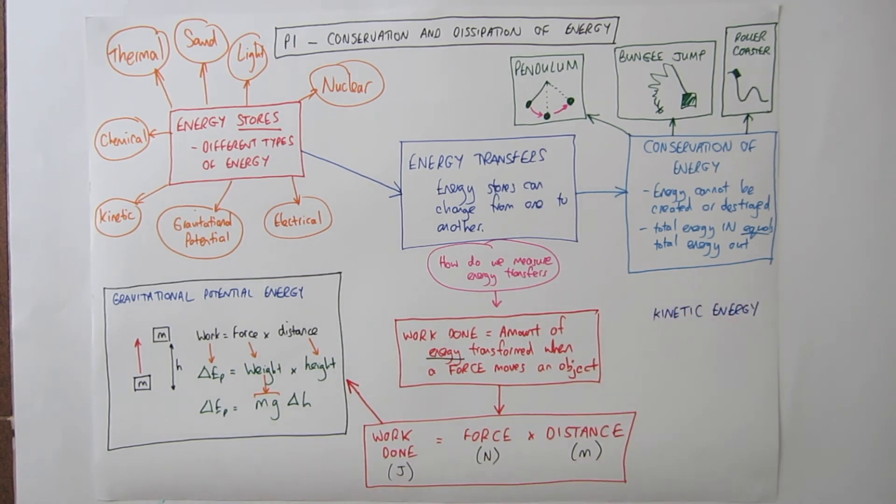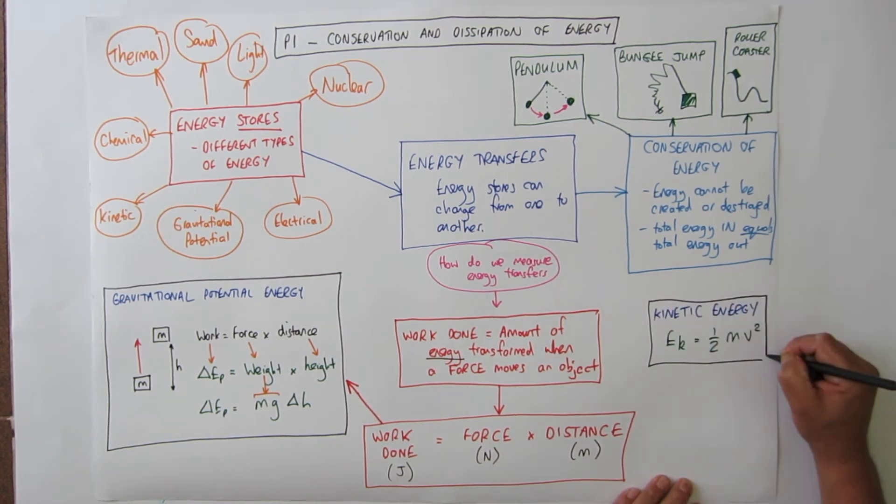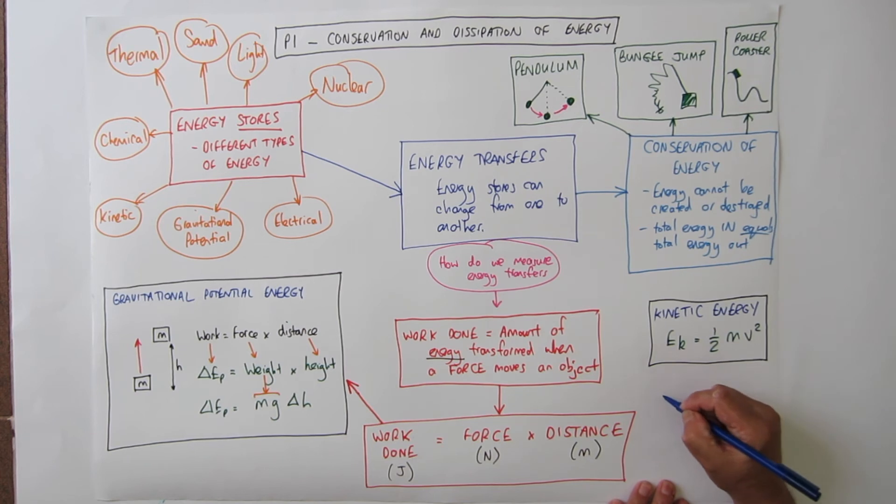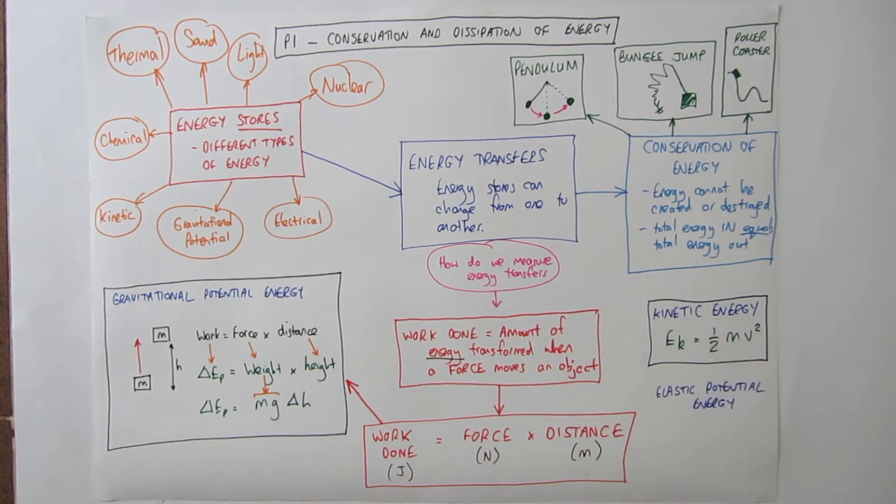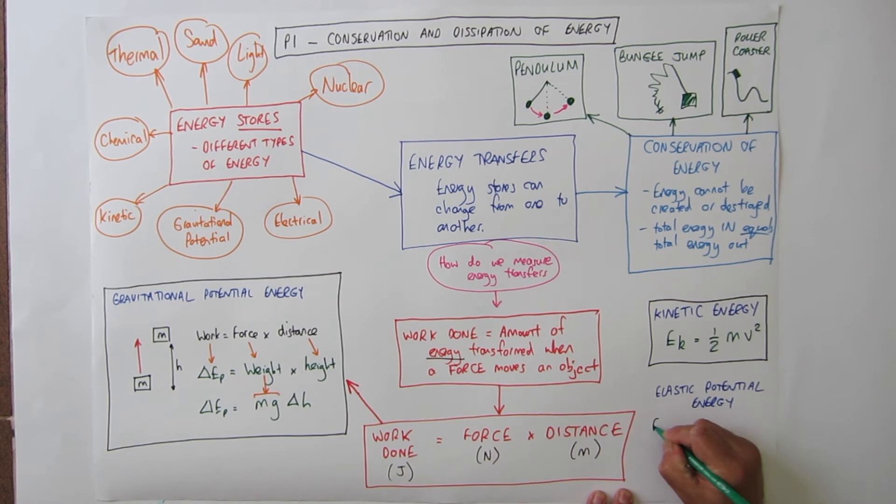The second equation that comes from the work done equation is one for kinetic energy. Where kinetic energy is a half M V squared.